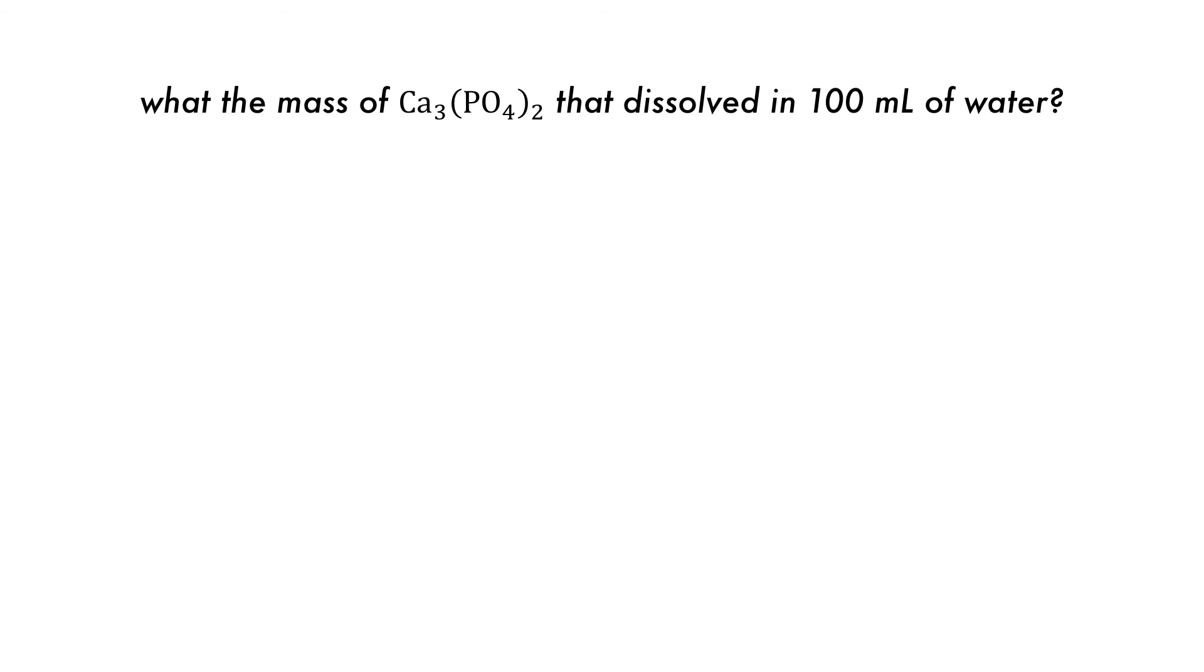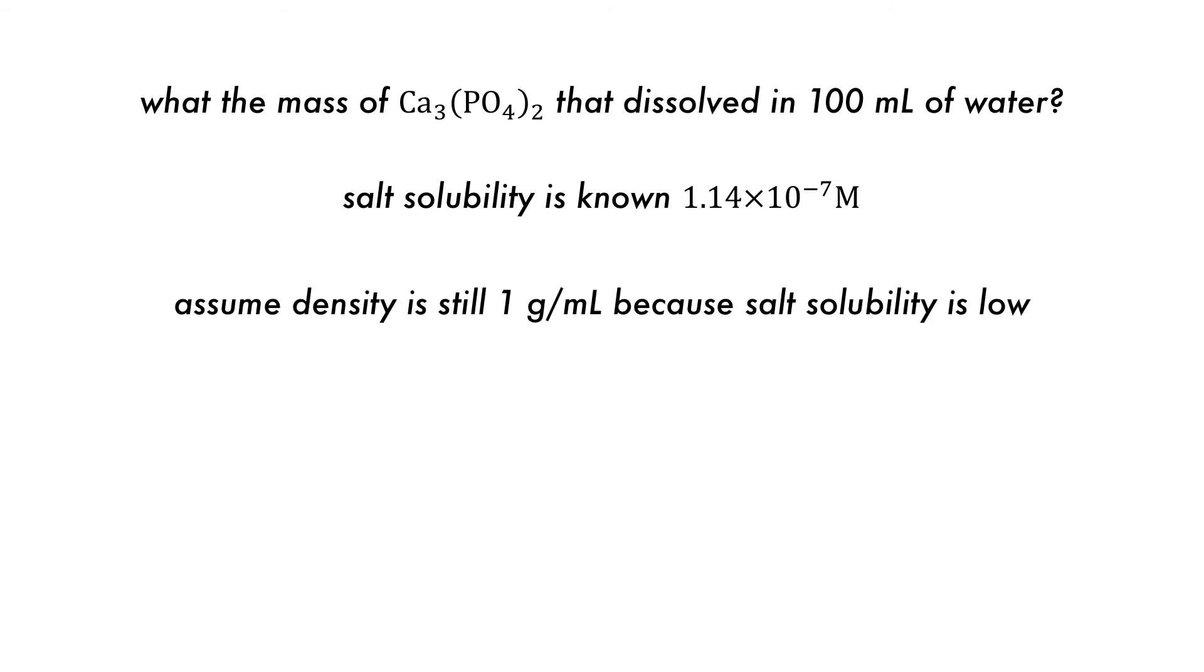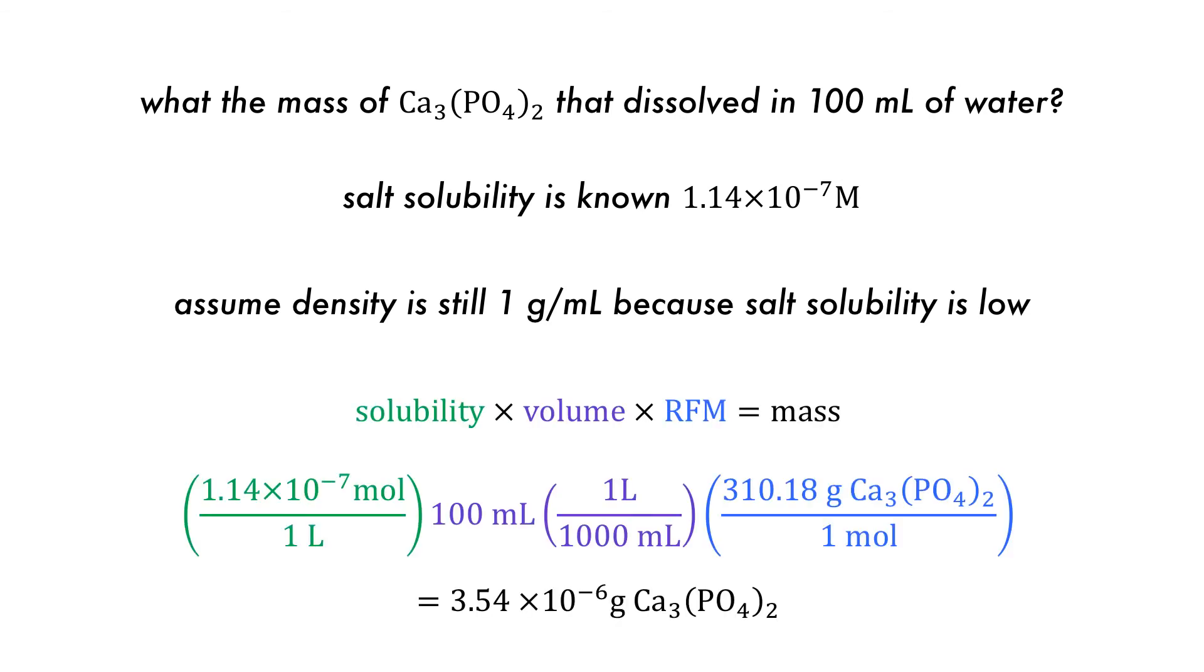If we were then asked to determine the solubility in grams per 100 milliliters, how would it be determined? We know the saturation concentration of the salt, and it can be assumed that the density of water is still 1 gram per milliliter because the salt is only slightly soluble. The dissolved mass can then be calculated as follows, ensuring that the units are all correct, and it can be seen that the dissolved mass is very small.